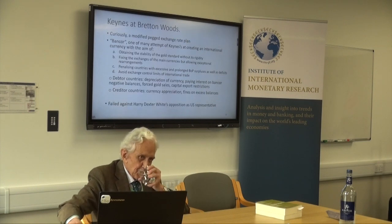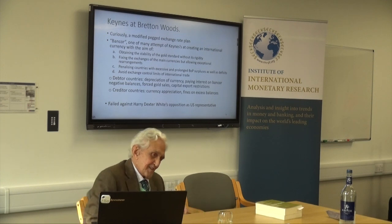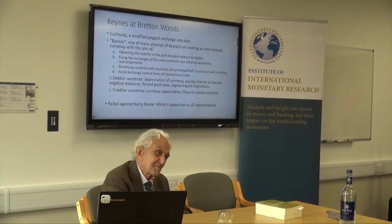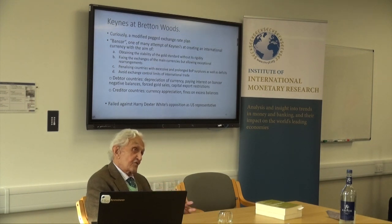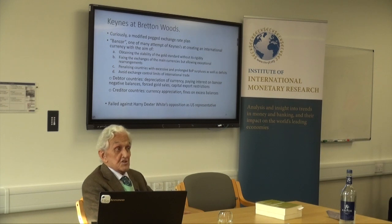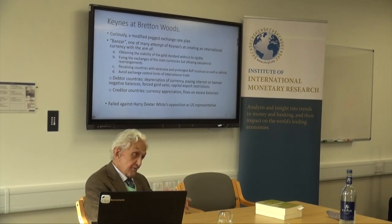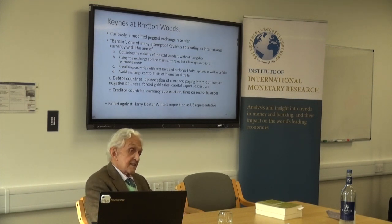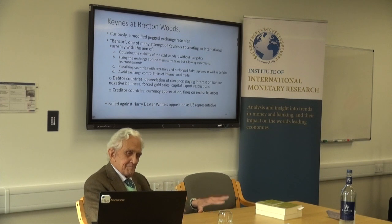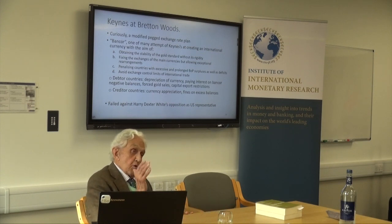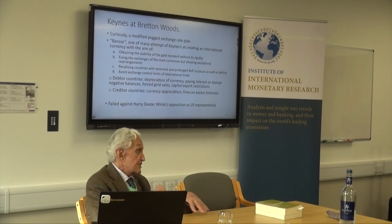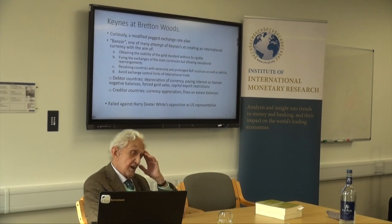Now we go to the later Keynes - at Bretton Woods. In the 1923 Tract, Keynes defended monetary sovereignty for the Bank of England, with the price level determined domestically. But he realized that what happened in the 1930s after the move to paper money and flexible exchange rates was exchange rate wars, reduction and control of foreign trade, and all sorts of terrible things through the 1930s and up to after the Second World War. So during the Second World War, with Keynes again engaged as an economist in defense of his country - as he had been in the First World War - he proposed a solution.